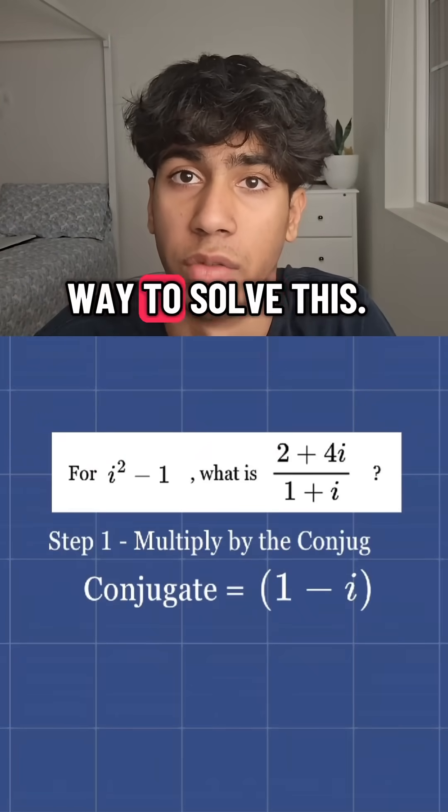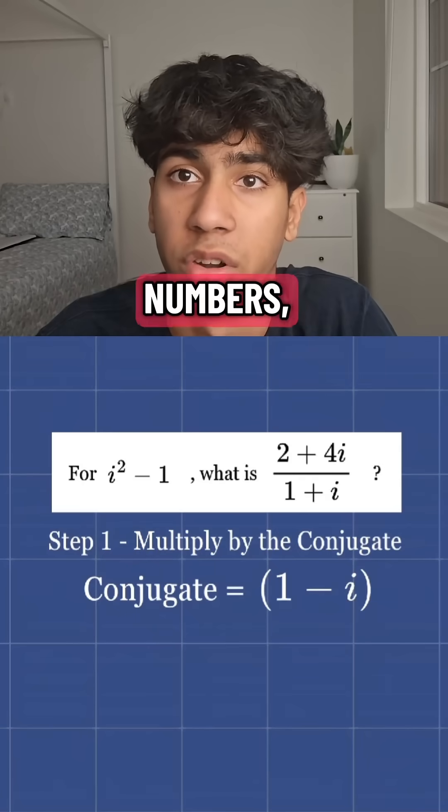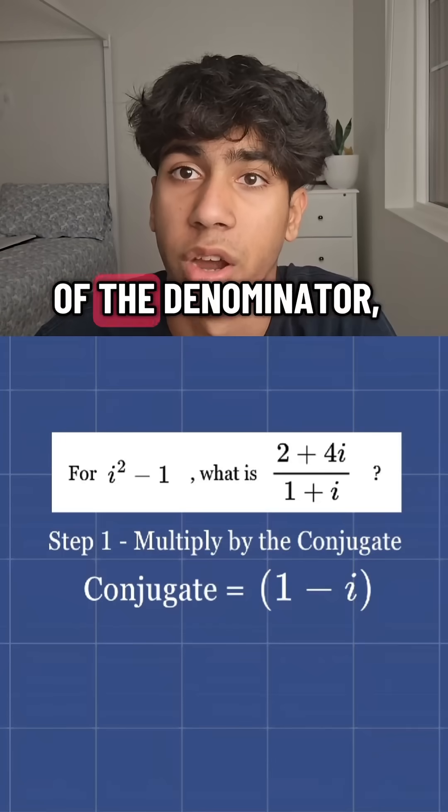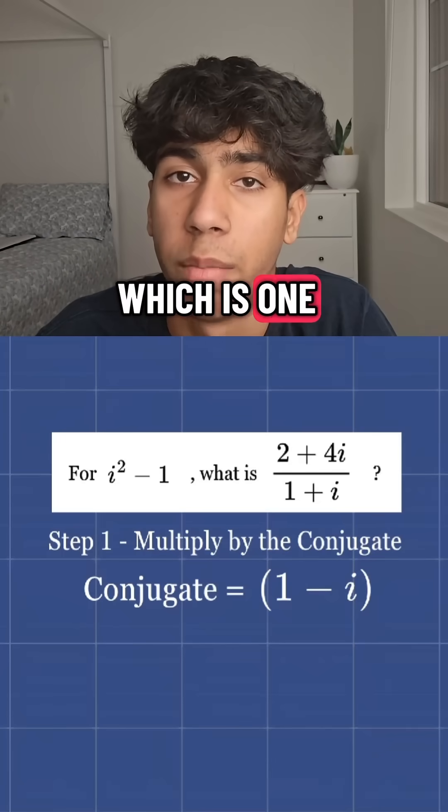Alright, here's one quick way to solve this. To divide complex numbers, multiply the top and the bottom by the conjugate of the denominator, which is 1 minus i.